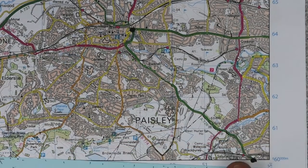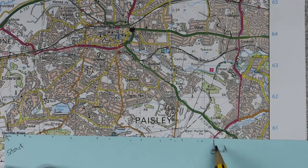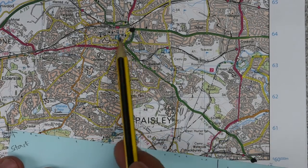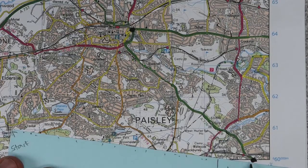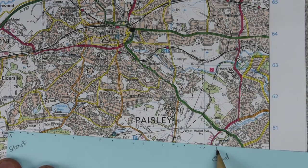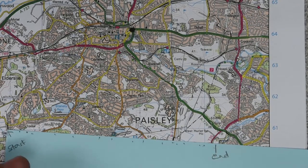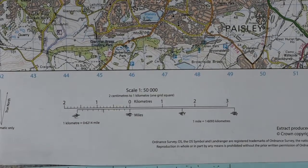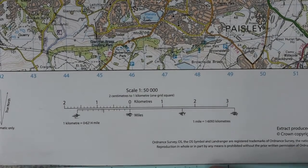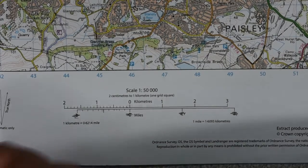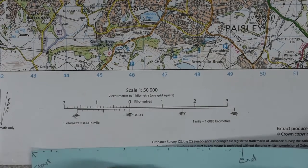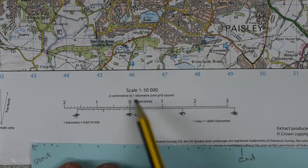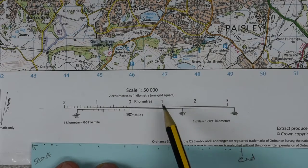Now we need to find out what that distance actually means on the map. What we've done is put that wiggly road onto a straight piece of paper. So now we're going to go down to the bottom of the map and find the scale. Here's the scale on the bottom of your map — this is a 1:50,000 scale map, so two centimetres is one kilometre.